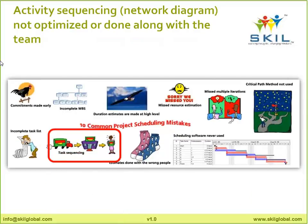The eighth mistake: activity sequencing not optimized. Sometimes we assume hard dependencies — Activity B cannot start until Activity A is completed. But your team and SMEs may identify that you can actually start some work before the predecessor is complete. This is the optimization I'm talking about — part of multiple iterations. Some things can go in parallel; some are true predecessors or successors. Optimizing this sequencing is critical and commonly missed.